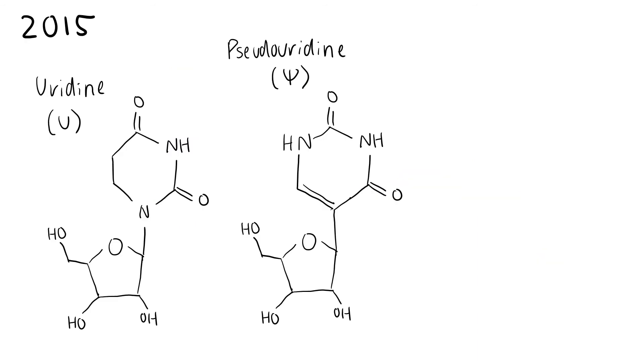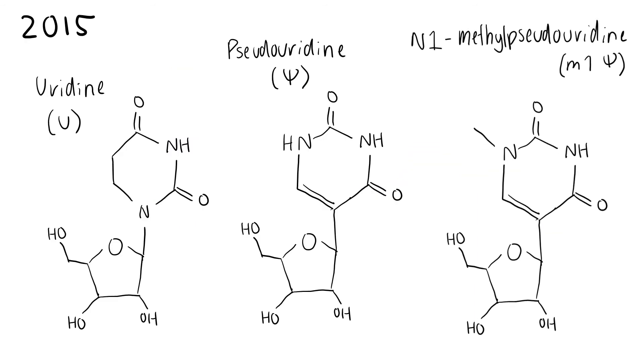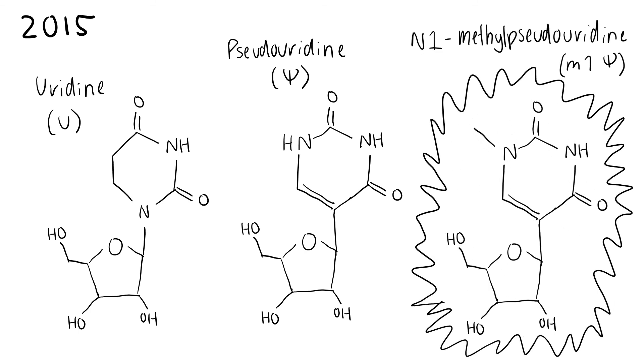In 2015, N1-methyl-pseudouridine modification was shown to outperform pseudouridine modification by further reducing innate immunogenicity and improving cellular stability.